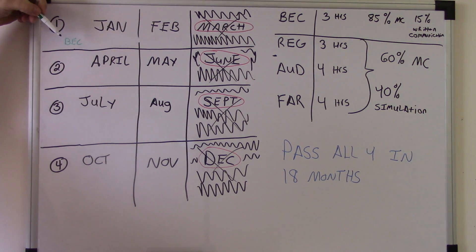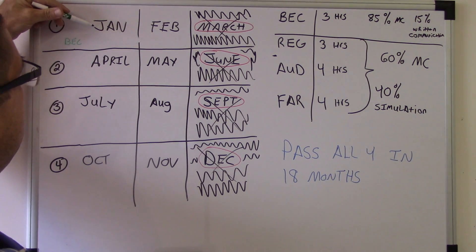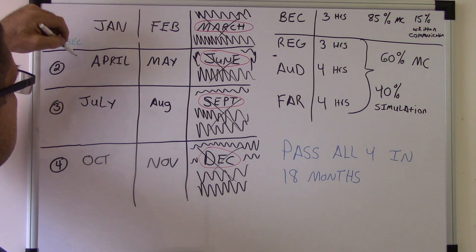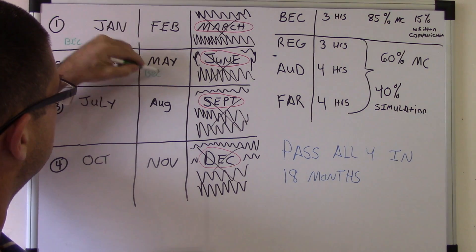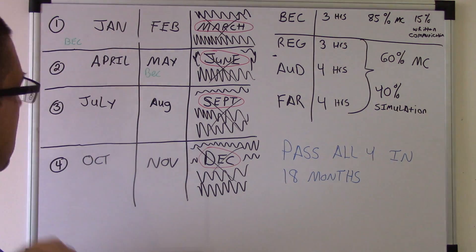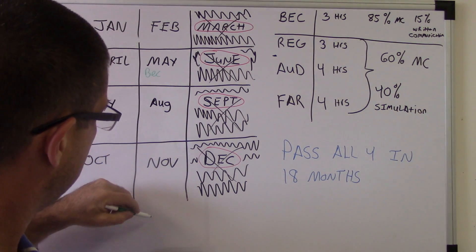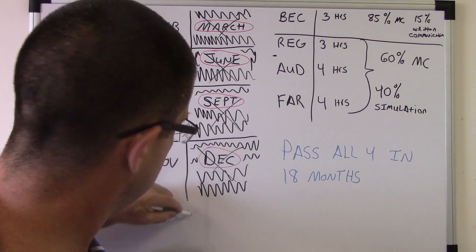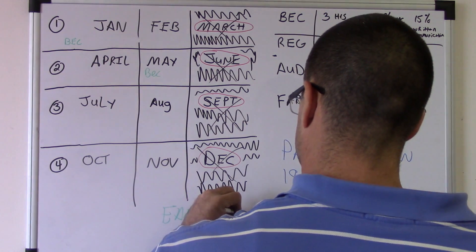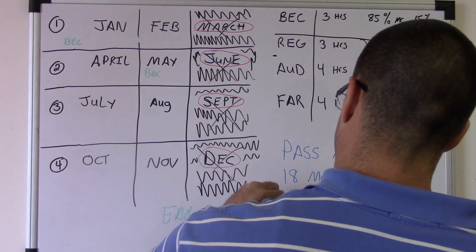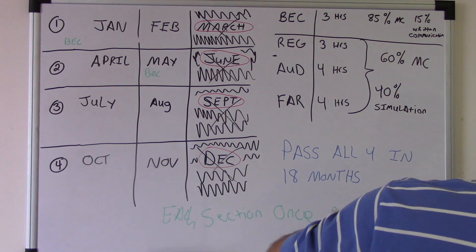Like if you take BEC in January, you can't take BEC again until April or May. April or May. And then you know you can only take it once per window. Each section once per window.